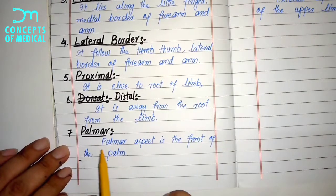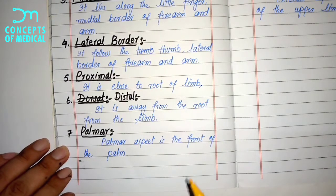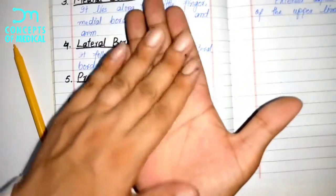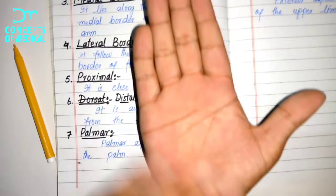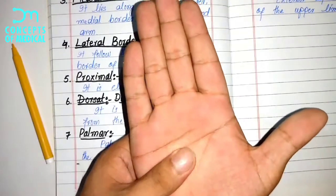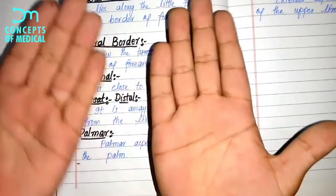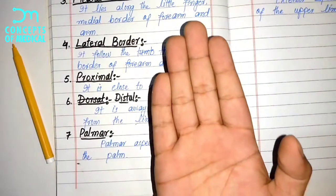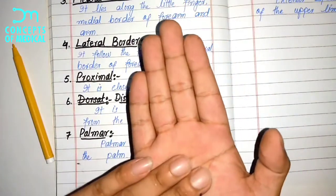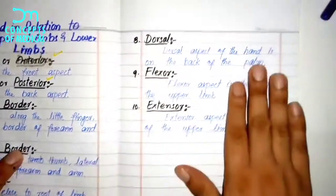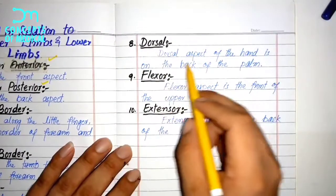Another term is palmar. The palmar aspect is the front of the palm. When standing in anatomical position, the palms are actually facing forward, so we call this the palmar side. Any structures or muscles on this front side of the hand are described using the palmar term.